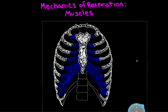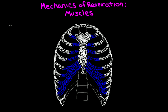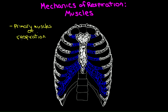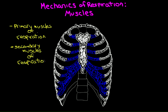The intercostals plus the diaphragm together are the primary muscles of respiration — muscles whose main function is in respiration. If there are primary muscles, that suggests there must be secondary muscles of respiration, and indeed there are. These are muscles whose function isn't just in respiration; they have an accessory function and can help in respiration, but their true function is in something else.